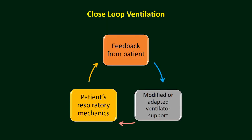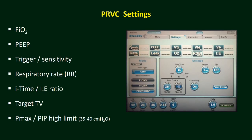In this closed loop ventilation mode, the ventilator constantly collects patients' respiratory mechanics data and modifies ventilator parameters. The settings of PRVC include: FiO2, PEEP, trigger or sensitivity, respiratory rate, I-time or I:E ratio, target tidal volume, and P-max or PIP high limit. This is the monitor of a particular brand of mechanical ventilator — in your ventilator you may find a different appearance. When you select PRVC mode you will find the parameters to set.